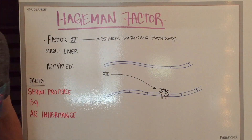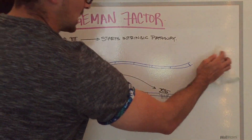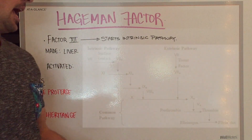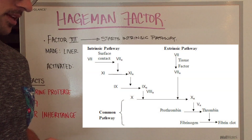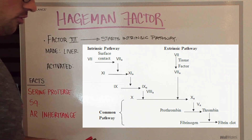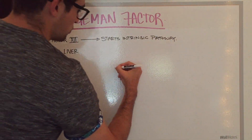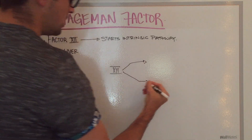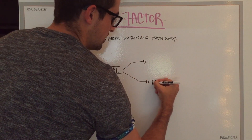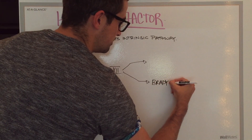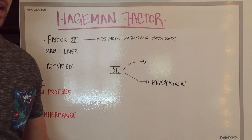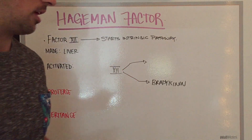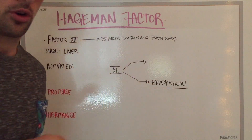Once factor 12 becomes activated, it starts the intrinsic pathway — you can look at the diagram on screen and pause the video if needed. When the Hagman factor is activated, it does two things. One of the things it does is increase the amount of bradykinin, which is associated with pain. This works through the prekallikrein-kallikrein pathway, and the downstream effect is increased bradykinin.